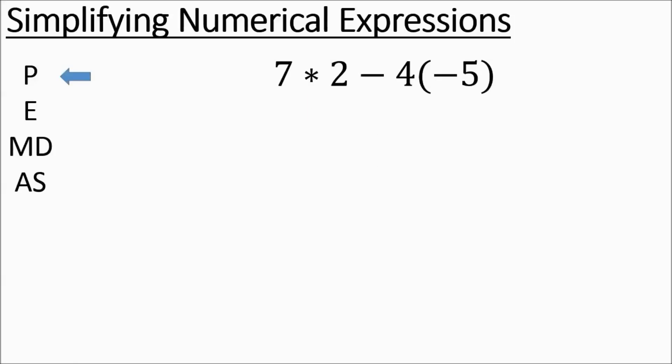So, parentheses. Now, we do have parentheses here. We have this negative 5 in parentheses. But there's nothing going on in the parentheses. It's just a number hanging out. So we move on. No exponents. We do have some multiplying. We actually have two multiplication problems. And they're far enough apart to where you can take care of them both in the same step.